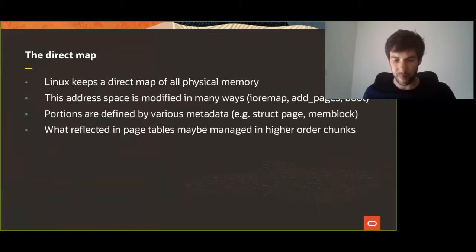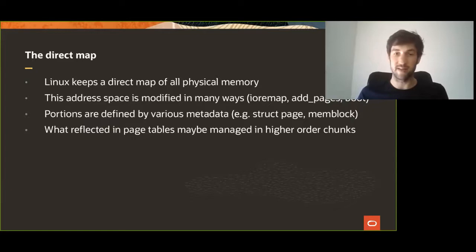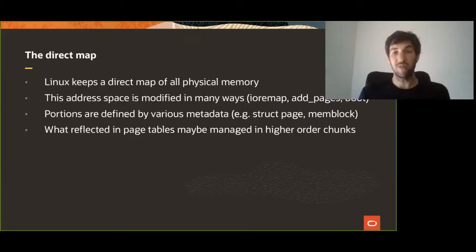Linux keeps the map of all physical memory in the kernel page tables, which is called the direct map. This address space is modified in a lot of ways throughout the different OS lifecycle stages — at boot when initializing the memory map and all the system RAM, or at hot plug when hot plugging new memory, or when you try to map an IO address.